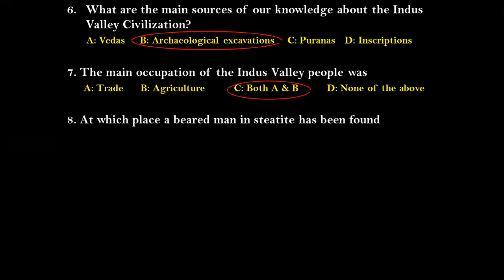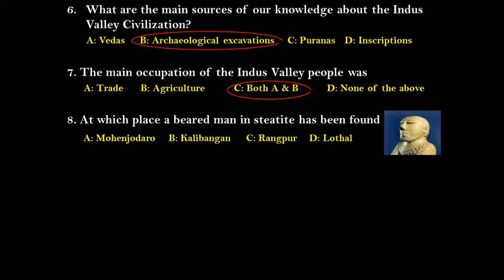Question eight: At which place was a bearded man statue found? Options are Mohenjo-Daro, Kalibangan, Rangpur, and Lothal. This bearded man is referred to as the Priest King in the NCERT Class 12 textbook. The correct answer is Mohenjo-Daro.